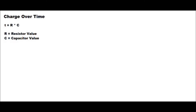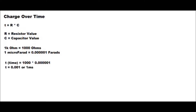After 5 T cycles the capacitor will be charged 100%. In the simulation we used a 1 kilo ohm resistor and a 1 micro farad capacitor. We need to convert the values to ohms and farads: 1 kilo ohm equals 1000 ohms and 1 micro farad equals 0.000001 farads. To calculate the value of T we multiply 1000 by 0.000001, so T equals 0.001 or 1 millisecond. The time taken for the capacitor to reach full charge is 5 times 0.001, which equals 0.005 or 5 milliseconds.